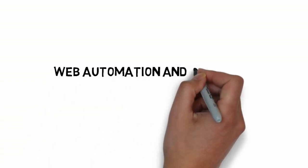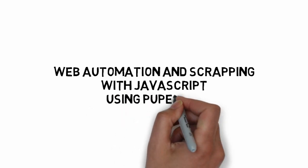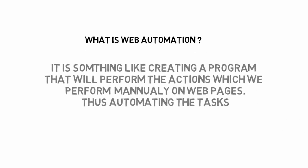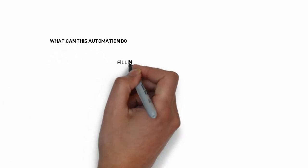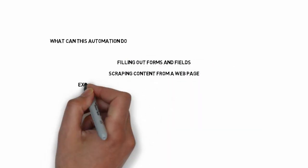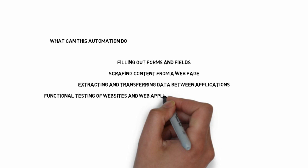Hello friends, welcome to YouTube. In this series we are going to learn about web automation and scraping with JavaScript using Puppeteer. Web automation is basically creating a program which will perform the actions we usually perform manually — for example, going to a website and downloading images, or searching for the top 10 images. If you don't have an API for any kind of data, you can use web scraping to scrape the data from that website.